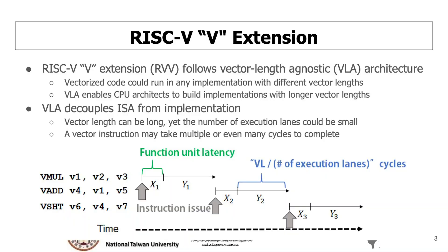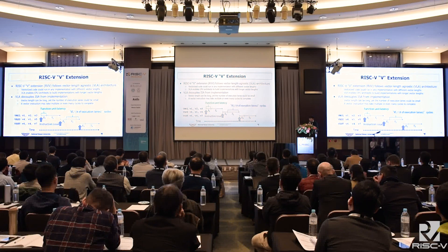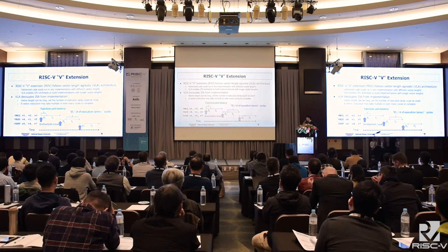Therefore, a vector instruction may take multiple or even many cycles to complete. The figure is the example. The X1 is related to the function unit latency and Y is related to the vector length divided by the number of execution lanes. The code sequence on the left side shows that vector A depends on the vector multiply, and the vector shift depends on vector A. In this situation, the vector multiply must complete before the vector A instruction can be issued.